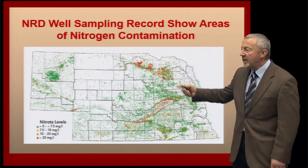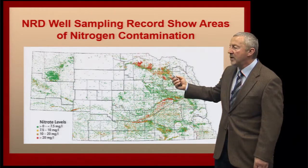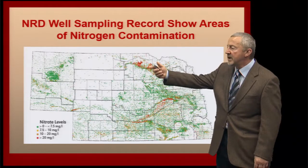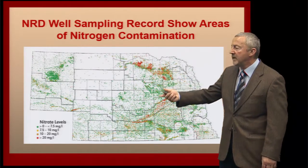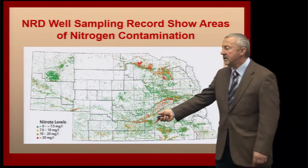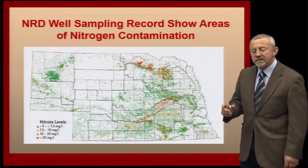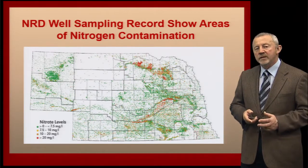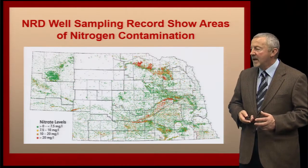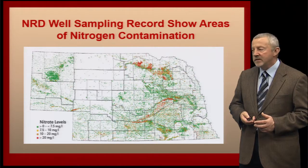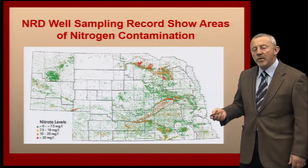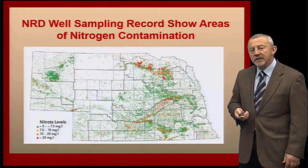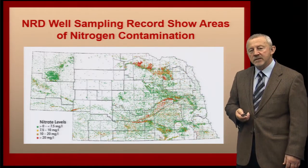As we look at the state of Nebraska, we have the groundwater quality sampling that was done by the Natural Resources Districts. This particular map shows you areas where the nitrate concentration of the groundwater is particularly high across a broad section of the area. The more dense the dots that you see on this map, the more frequent the water samples analyzed came back with nitrate contamination. These are areas where we are greatly concerned about the nitrate concentration in the groundwater.